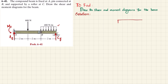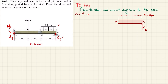Let me draw the free body diagram of segment BC. At point C, we have CY acting upward. There is a distributed load of 400 Newton per meter along this portion. At point B, when you remove the pin, you have a vertical reaction force BY. This is the free body diagram of segment BC.